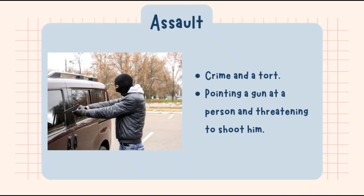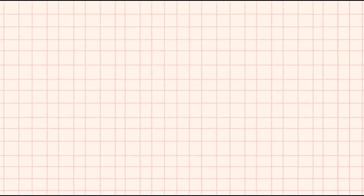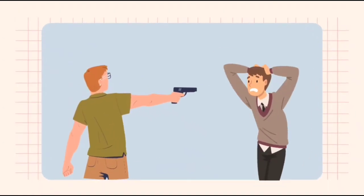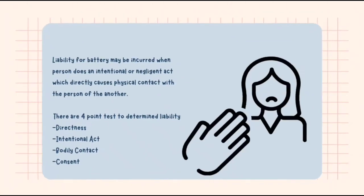In the case R v Ireland 1997, the defendant made silent telephone calls to the victim. In dealing with the issue of whether silence constitutes an assault, the House of Lords tackled the issue of silence as an assault.